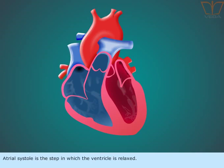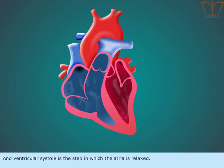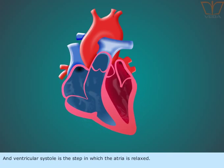Atrial systole is the step in which the ventricle is relaxed. And ventricular systole is the step in which the atria is relaxed.